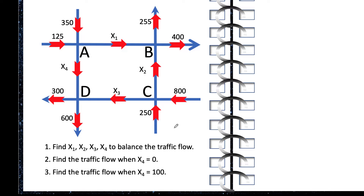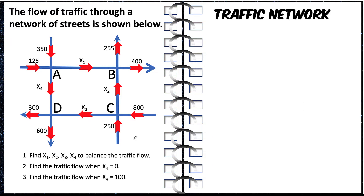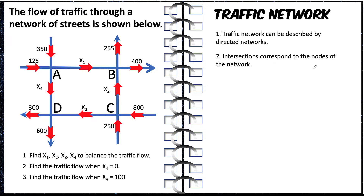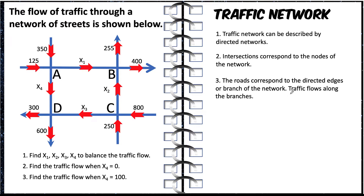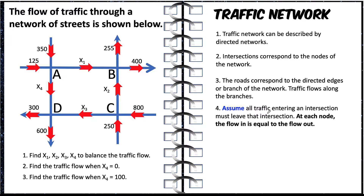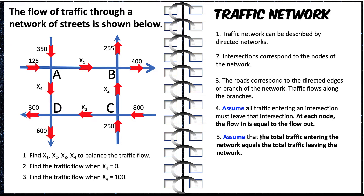You can pause the video and see if you can solve this traffic flow problem. Now let's solve this problem together. There are five ideas I'd like to discuss first regarding traffic networks. First, a traffic network can be described by directed networks as shown in this figure. Second, intersections correspond to the nodes of the network — here we have four nodes A, B, C, and D. Third, the roads correspond to the directed edges or branches of the network, and traffic flows along the branches as shown by these arrows. Fourth, and very important: assume all traffic entering an intersection must leave the intersection — at each node, the flow in equals the flow out. And fifth, assume that the total traffic entering the network equals the total traffic leaving the network.